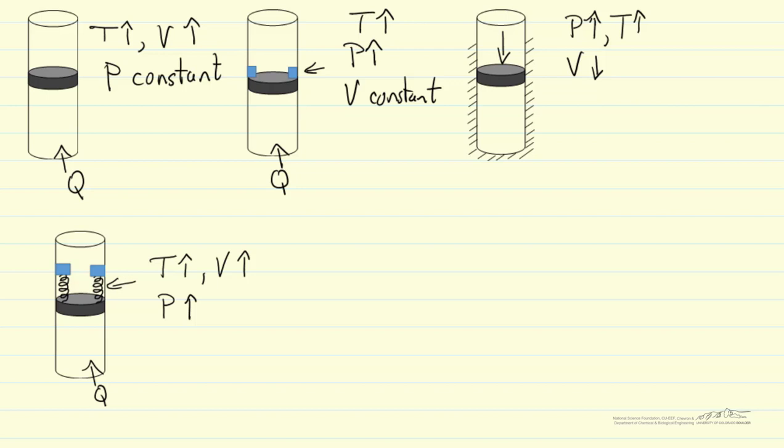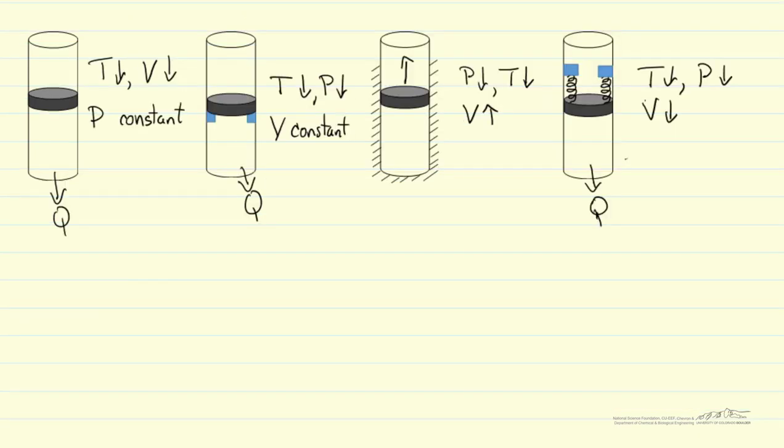Instead of adding heat, we could take heat away from these three systems, or instead of compressing the gas, we could expand the gas. And then we have very similar behavior in the opposite direction. Let me just write that down, won't go through the details, and you should check to make sure this is consistent with your thinking. So here are the four possibilities that we remove heat, or we do an adiabatic expansion as opposed to compression, and the behavior is the opposite of what we just showed.